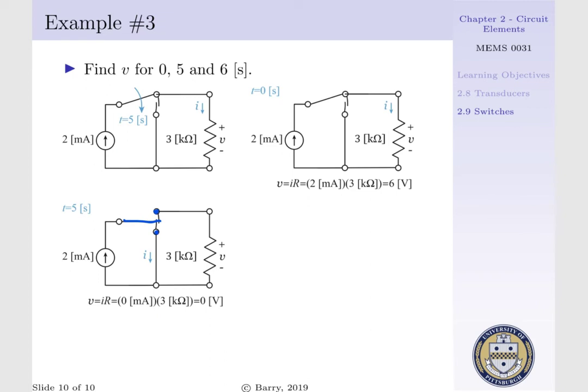Our current is going to take the path of least resistance, meaning it's going to go down our short circuit as opposed to the 3 kilo-ohm resistor, and the voltage potential across our 3 kilo-ohm resistor is equal to 0 volts.